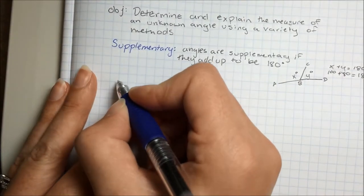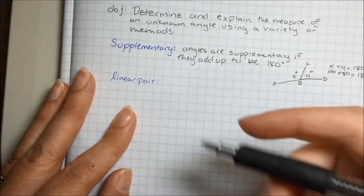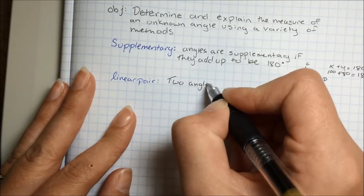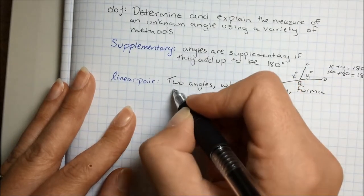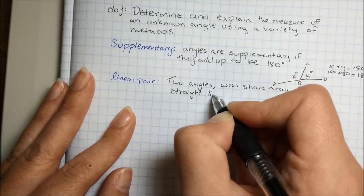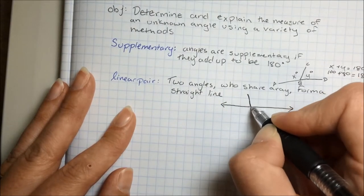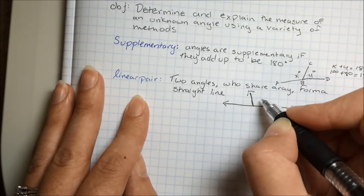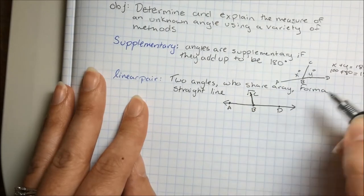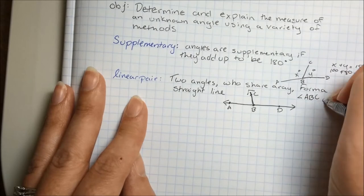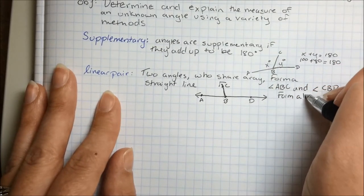Supplementary angles can always make a linear pair. A linear pair is when two angles who share a ray form a straight line. So a linear pair looks like a straight line, and then the shared ray in the middle forms two angles. If we label them, angle ABC and angle CBD form a linear pair.